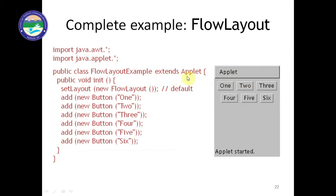The init function is used here. We set the layout with setLayout(new FlowLayout()). In the case of border layout we would write new BorderLayout(). We add buttons using: add(new Button("1")), add(new Button("2")), up through add(new Button("6")). These six buttons are added using the add() function.